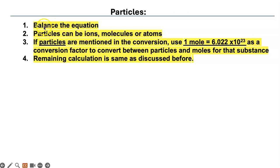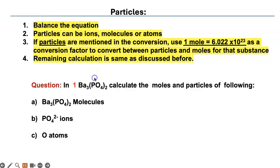Please write this down. First, you have to balance the equation. Remember that particles can be ions, molecules, or atoms. Whenever particles are mentioned, you are going to have a conversion factor where one mole is equal to Avogadro's number for that substance. You will use it each time, and the remaining calculation is the same as we have discussed before.